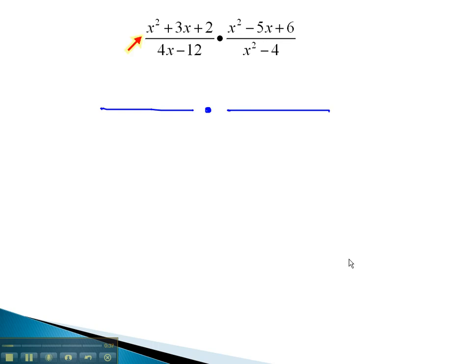In the numerator, we have three terms, and so we will factor by the AC method, multiplying to 2 and adding to 3. This is 2 times 1. Because we have a 1 in front of x squared, we can jump right to our factors x plus 2 times x plus 1.